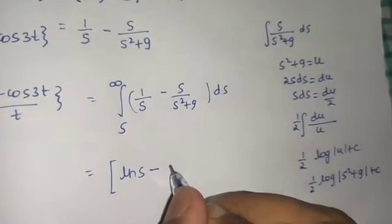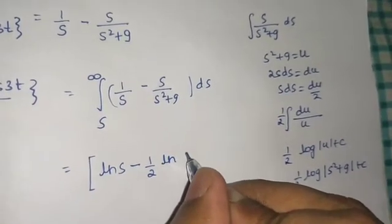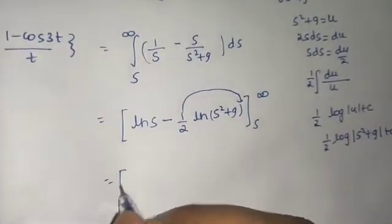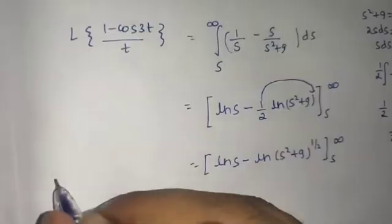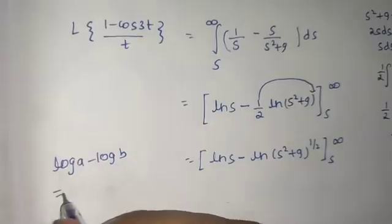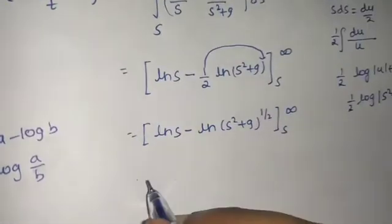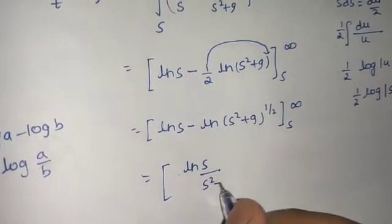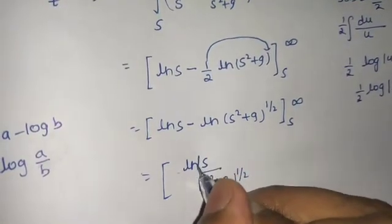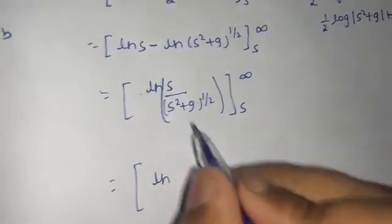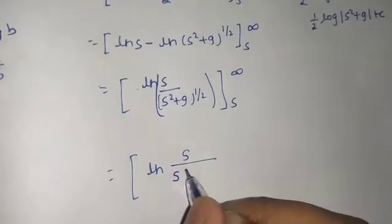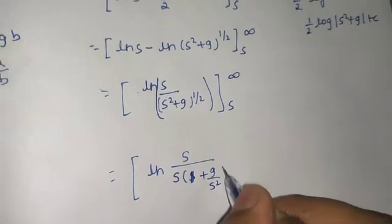So we have ln(s) minus (1/2) ln(s² plus 9), evaluated from s to infinity. We can move the 1/2 to a power and write this as ln(s) minus ln(s² plus 9)^(1/2). Using the log property log(a) minus log(b) equals log(a/b), we get ln of s divided by (s² plus 9)^(1/2). Taking s² common from the denominator, s cancels, leaving 1 plus 9/s² raised to the power 1/2.